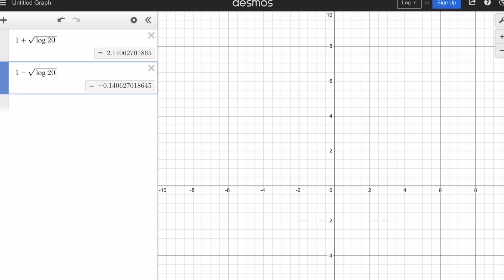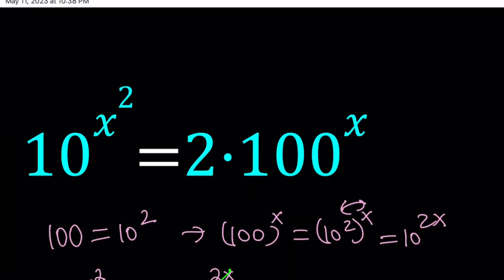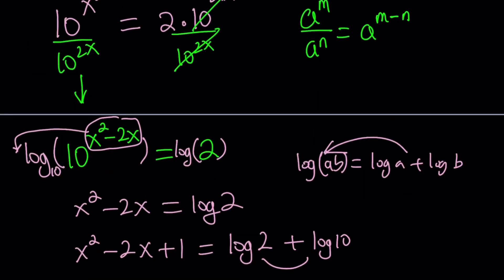So let's go back to the original problem and take a look at the graph. The x values we found, those are the solutions to our equation. The equation was 10 to the power x squared equals 2 times 100 to the power x. So apparently this turned into a quadratic equation because of x squared. Let's take a look at the graph.